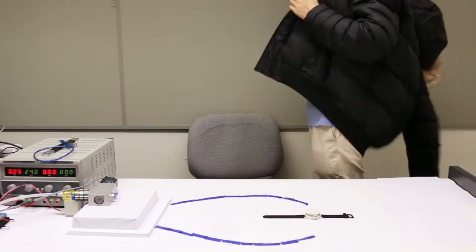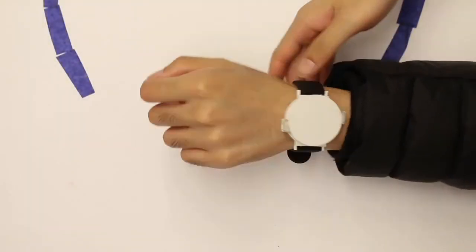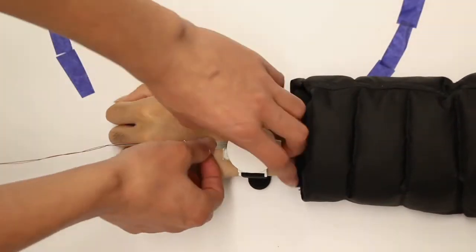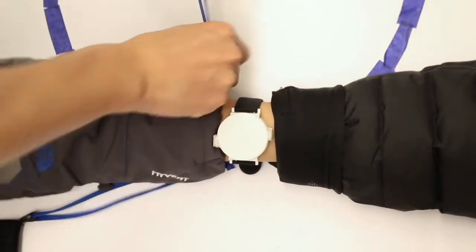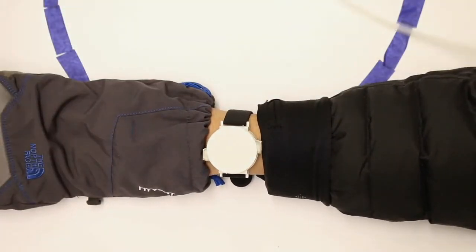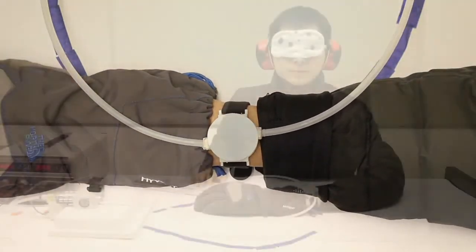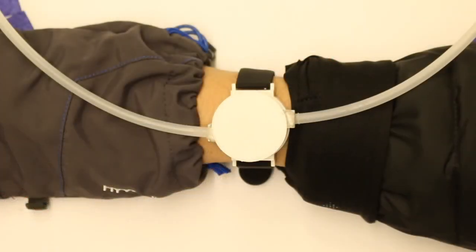To better understand the minimum change in force magnitude that is detectable by users, we conducted a JND study. We used a pressure sensor to ensure the same tightness on the wrist for all participants. Participants were asked to detect changes in the force feedback of our 3D printed prototype.